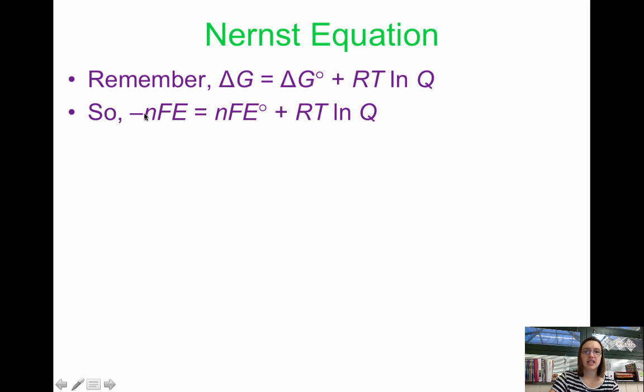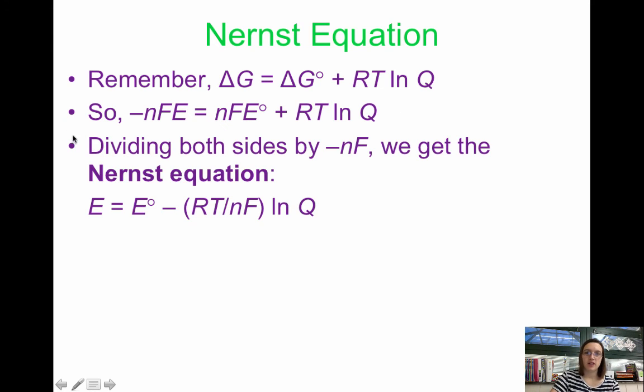If we plug in negative nFE equals nFE naught plus RT ln Q, we divide both sides by negative nF, we get the Nernst equation. E equals E naught minus RT over nF ln Q.